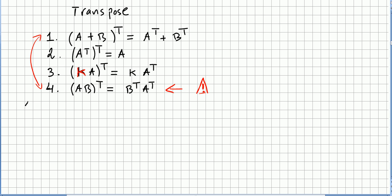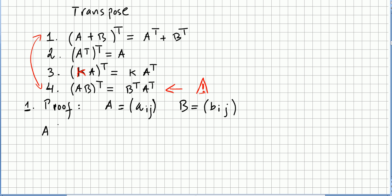Let us prove number one. So this is (A + B) transpose. A is the matrix with entries A_ij, and B is the matrix with entries B_ij — they have to be the same size. So (A + B) will have entries A_ij + B_ij. And (A + B) transpose will be in reverse order.